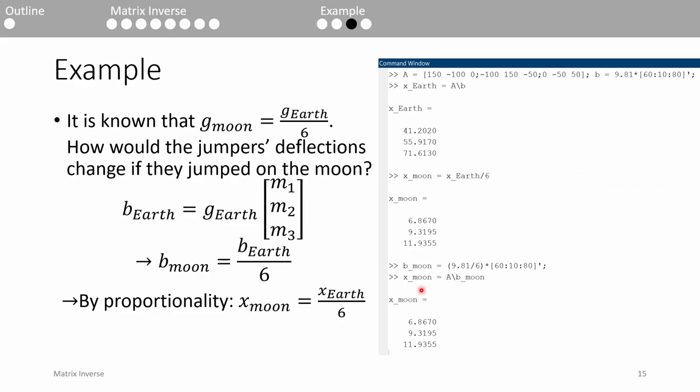Now let's put the bungee jumpers on the moon. The moon's gravity is only about one-sixth of Earth's gravity. We know that the gravity influences the b vector, so what we're essentially doing is asking how the displacements change when we scale the b vector. This is where proportionality is really handy.